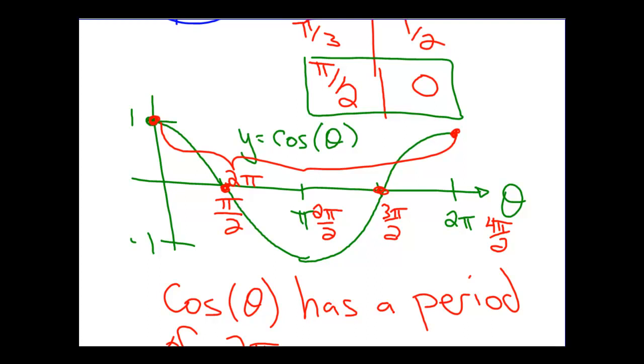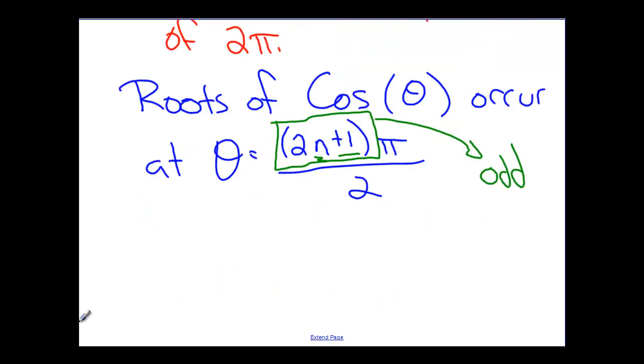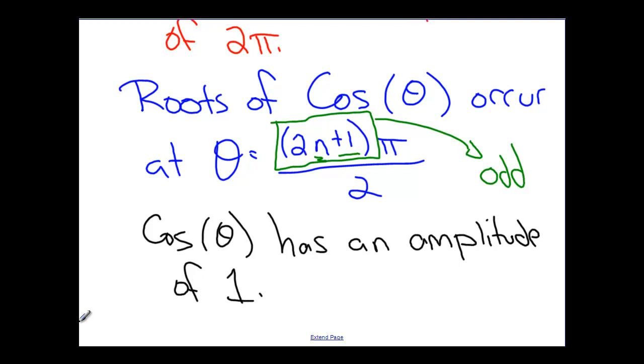Once again, if we think another similarity that cosine and sine share is the amplitude. Cosine and sine both are bounded by plus and minus 1. They both fit within that range. So another property we can state here is that cosine of theta has an amplitude of 1. So that's the maximum distance that it goes above or below the center line, which in our particular case is the x-axis.